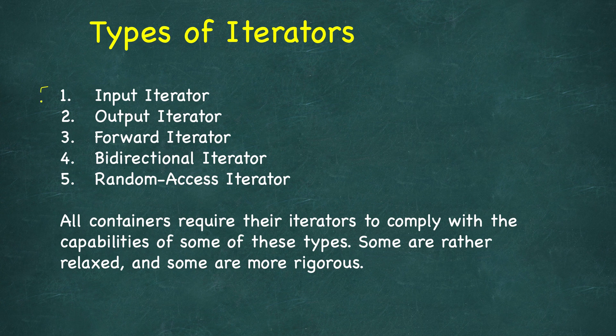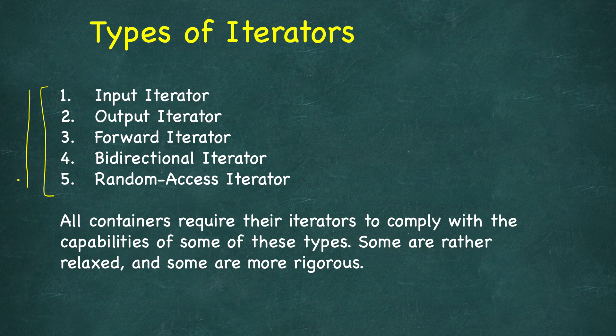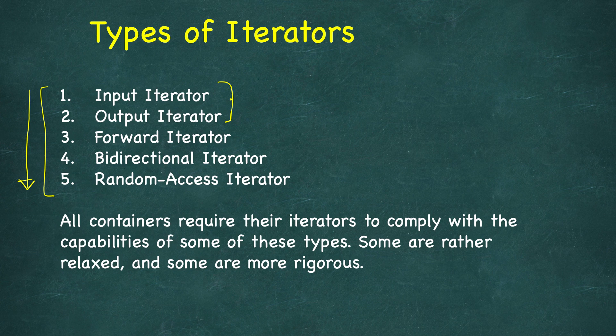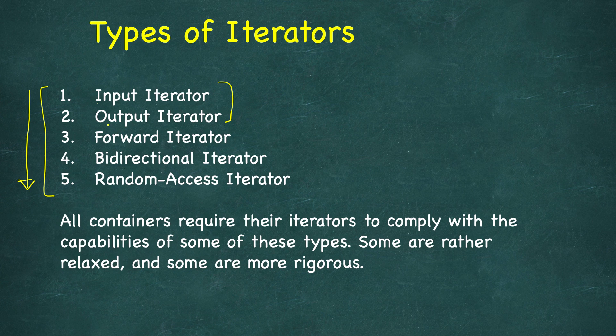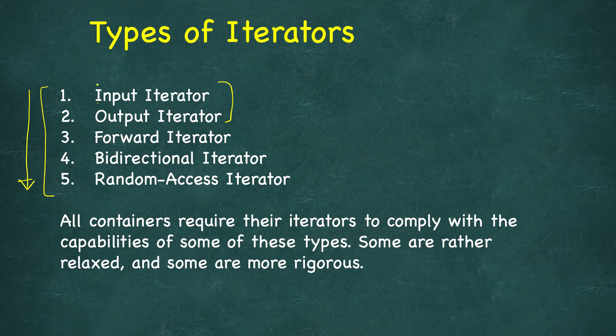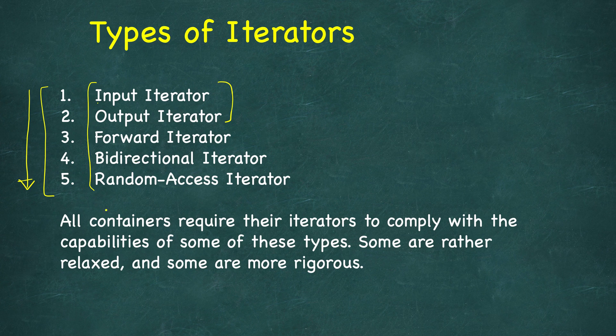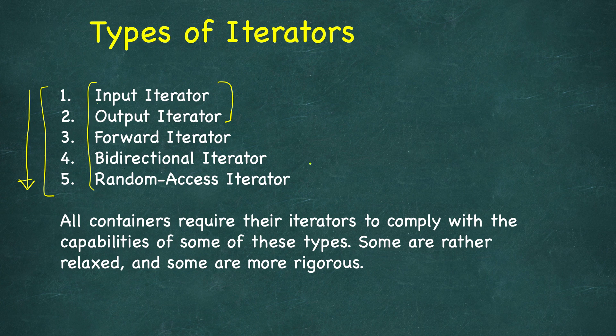There are five types of iterators in C++, and this order is important. Input iterator and output iterator have the smallest or least capabilities and the least requirements to implement them. Then forward, bidirectional, and random access iterators. These are clear from their names, although we will look at them in detail. All containers require their iterators to comply with the capabilities of some of these types. Some are rather relaxed, some are more rigorous.